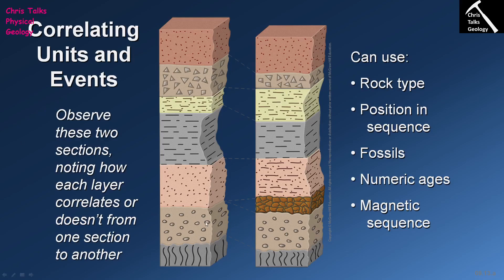When we compare rocks in two different locations we'll obviously want to correlate between the layers of rock. If fossils are present we've already discussed how we can do that — fossils are arguably the most straightforward method — but not every rock is going to contain fossils, so sometimes we have to use other methods. The first thing we can do is use the rock type to correlate, though most of the time this isn't actually that helpful, because common rock types like mudstones are extremely widespread.